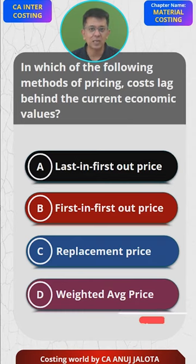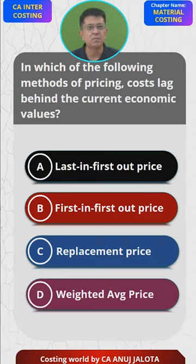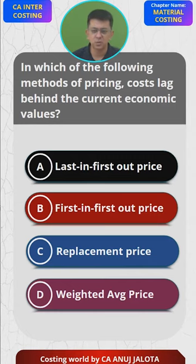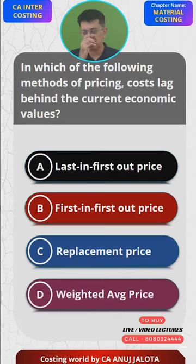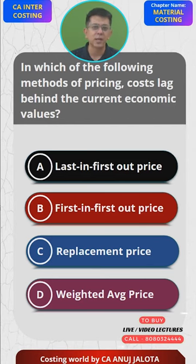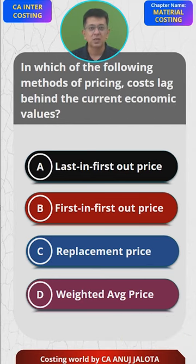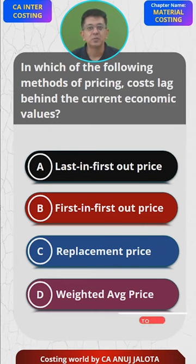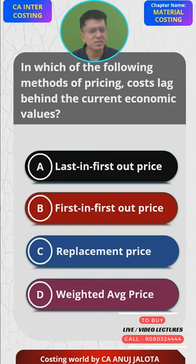Think of it like this: suppose in the first month we purchased 500 units at the rate of 2, and then prices increased to 3, then 4, then 5, then 6, and so on. Say 50 units were remaining at the end. Under the LIFO method, these goods will be valued at rupees 2, that is the first lot.